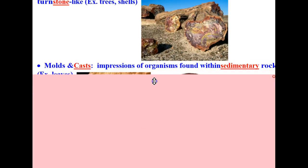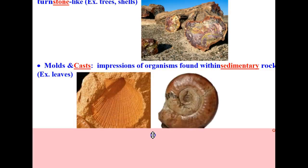Second type of fossil are molds and casts. Molds and casts are impressions of organisms found within sedimentary rock. For example, leaves or the impressions of these shells shown in these pictures.